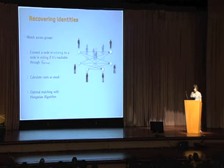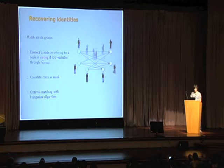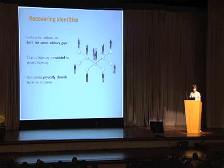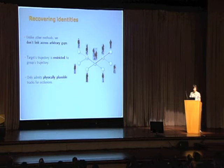Here you can see the structure of the problem we need to solve. We calculate the cost for each arc in the same way as with simple matching for global optimization tracking. In this case, we connect each entering node to an exiting node only if it is reachable through the group subgraph, and the optimal matching is obtained with the Hungarian algorithm. Unlike other methods, we do not link across arbitrary gaps. Instead, being in the same connected component is a necessary but not sufficient condition to match nodes, which restricts the trajectories to only physically plausible tracks for occlusions.